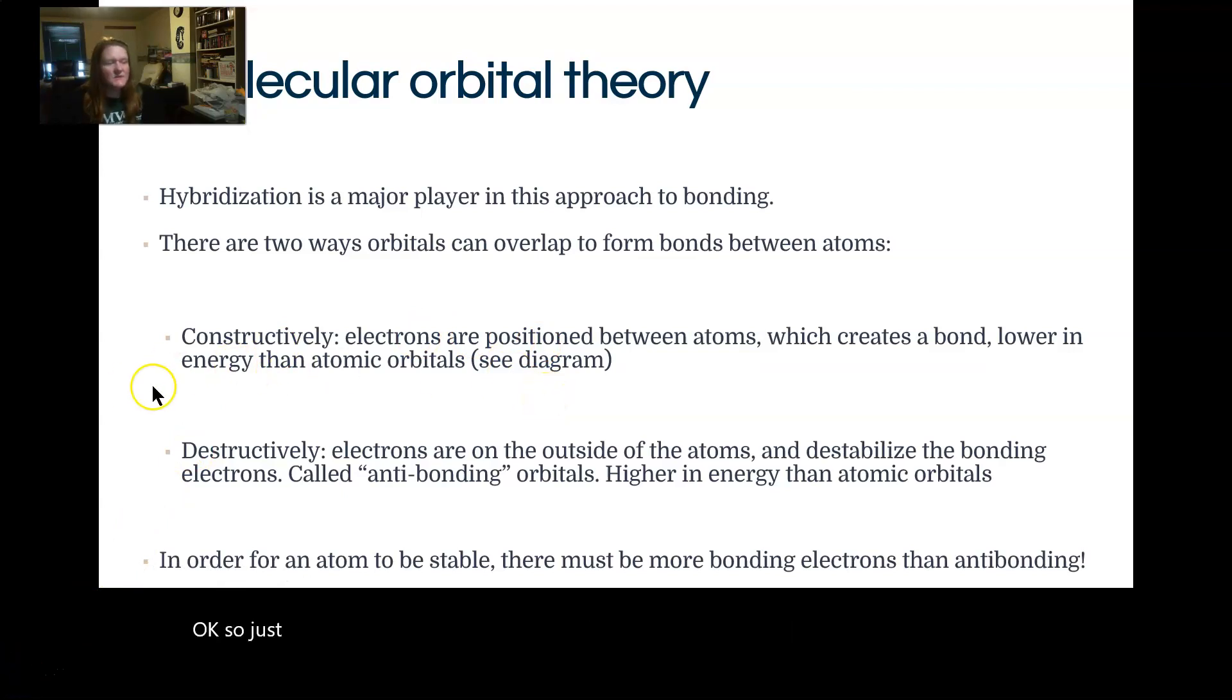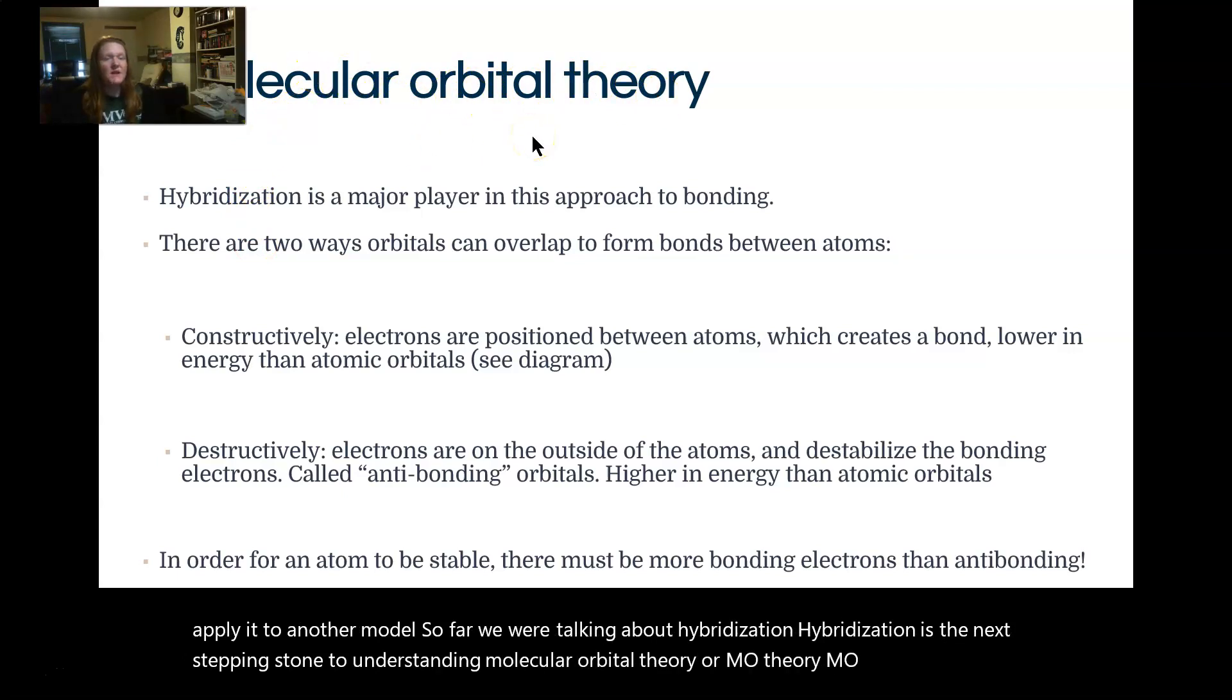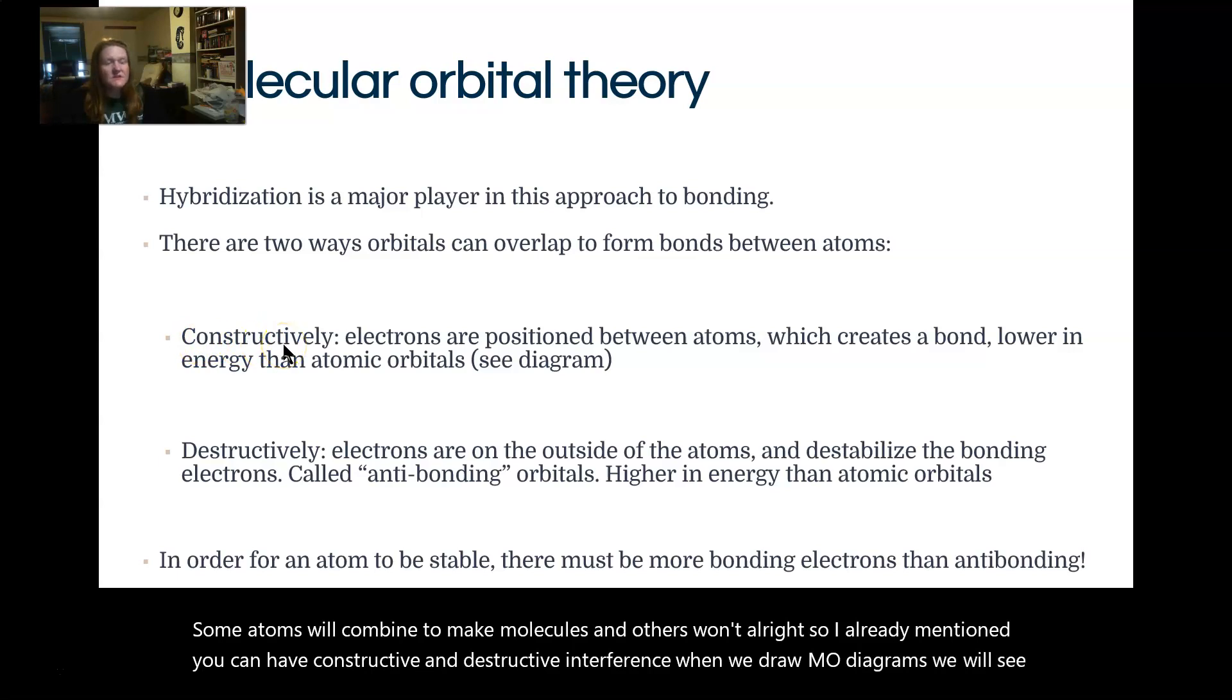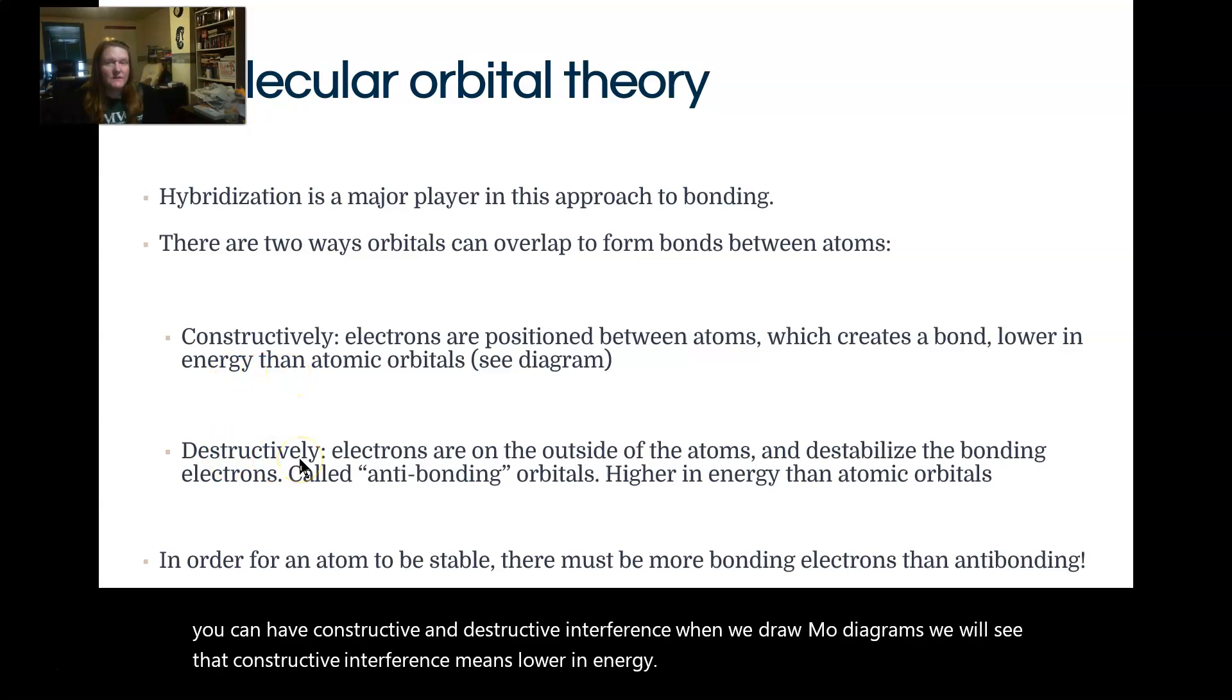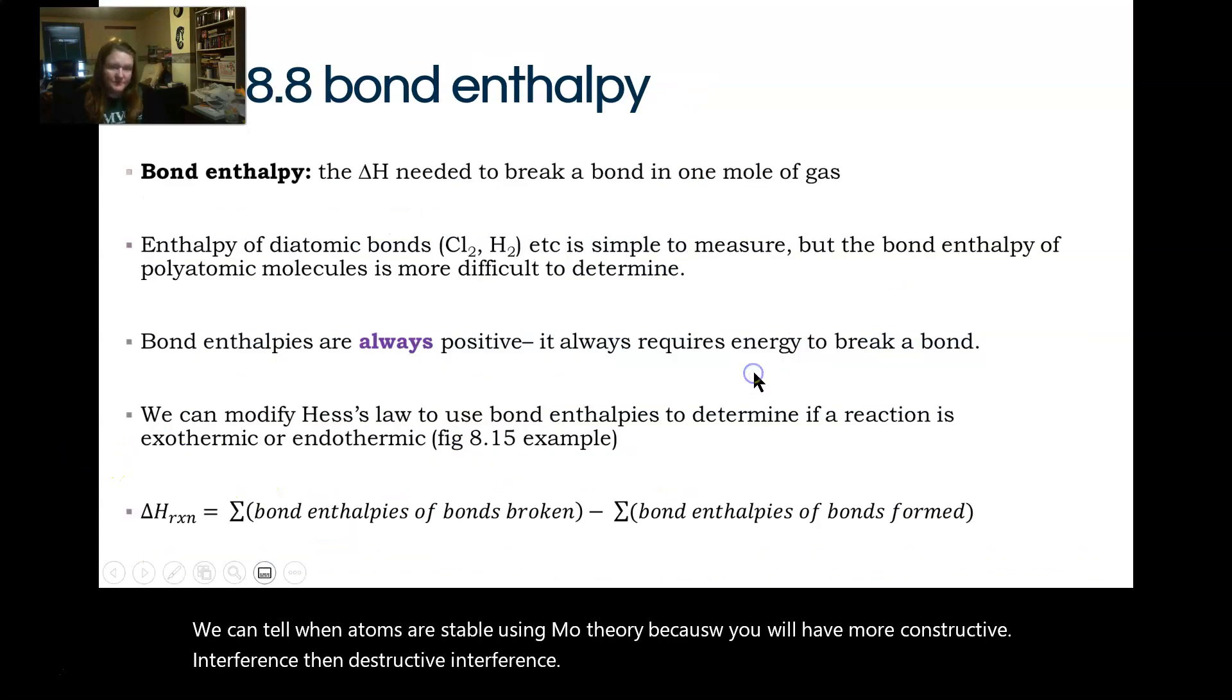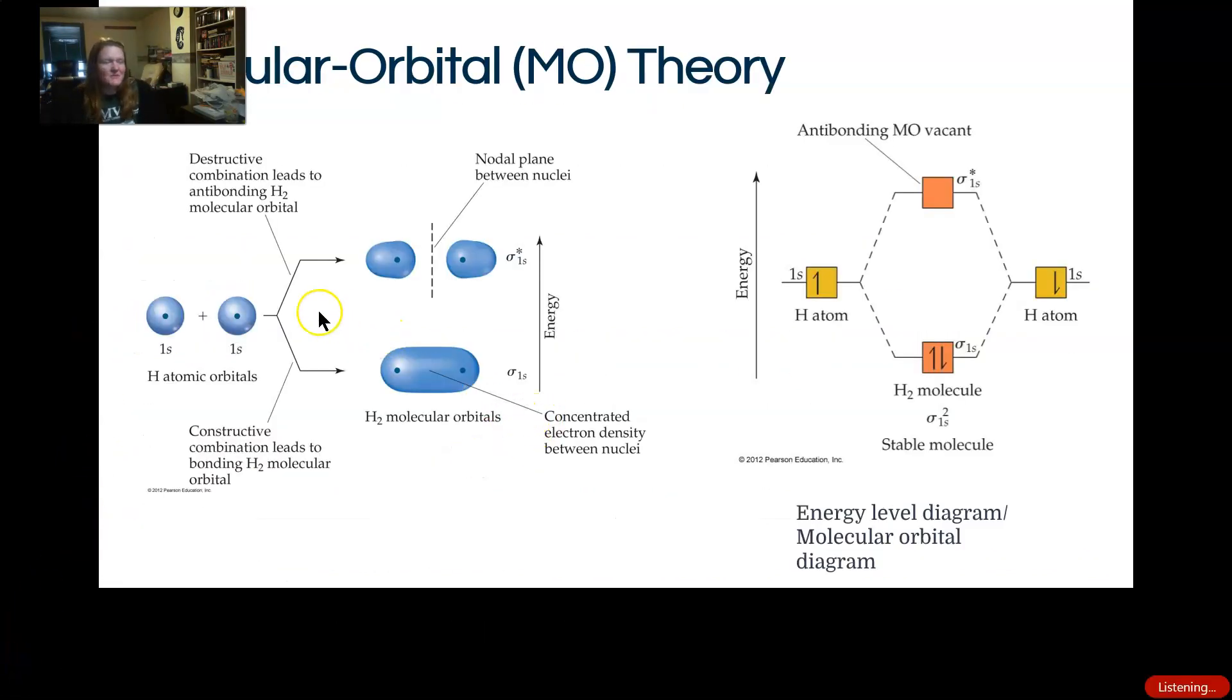So just kind of summarizing some of the stuff we already talked about, now we're going to apply it to another model. So far we are talking about hybridization. Hybridization is the next stepping stone to understanding molecular orbital theory, or MO theory. MO theory explains why some atoms will combine to make molecules and others won't. I already mentioned you can have constructive and destructive interference. When we draw MO diagrams, we will see that constructive interference means lower in energy, and destructive interference means higher in energy. We can tell when atoms are stable using MO theory because you will have more constructive interference than destructive interference.